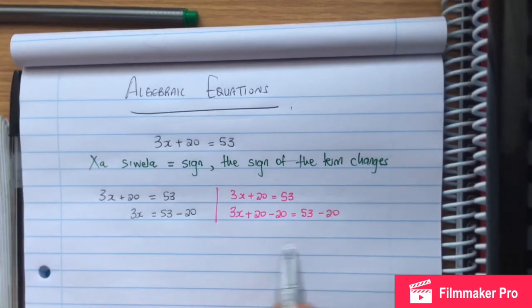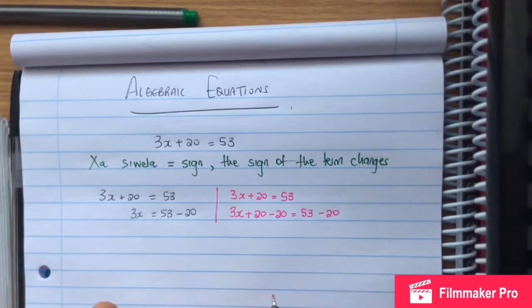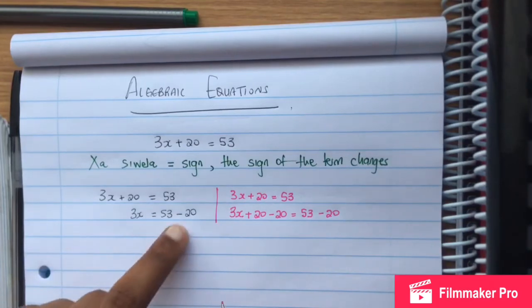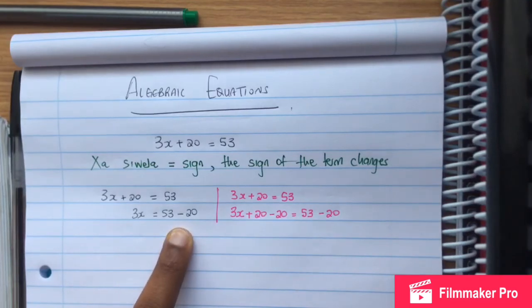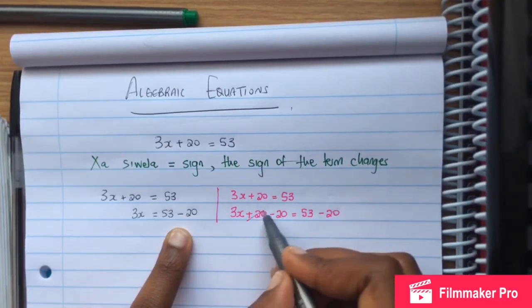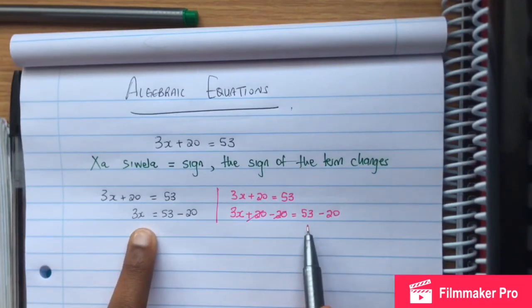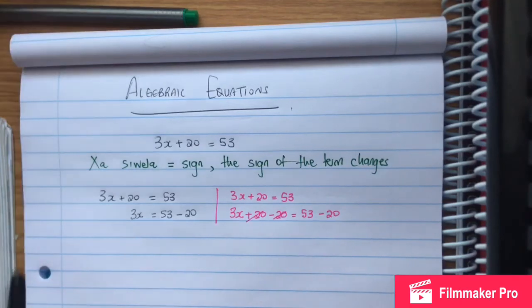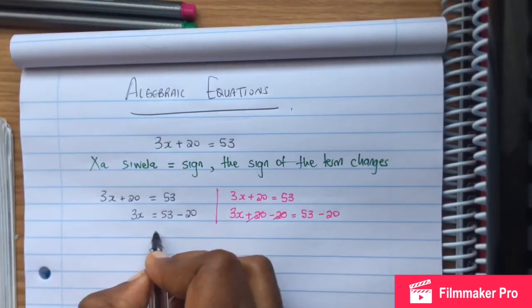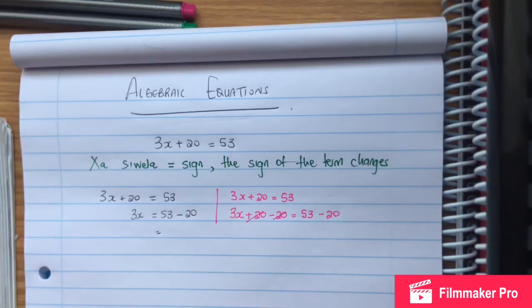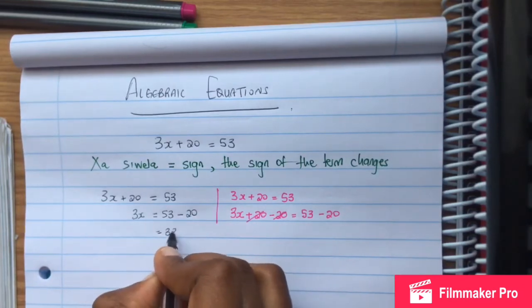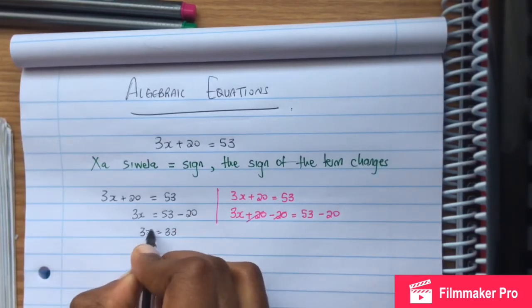We have 3x plus 20. We want to remove the 20, so we do minus 20, equals 53 minus 20. We need to do the same thing on both sides. What we do on the left, we must do on the right. So we subtract 20 from both sides. Then 20 minus 20 equals 3x equals 53 minus 20.